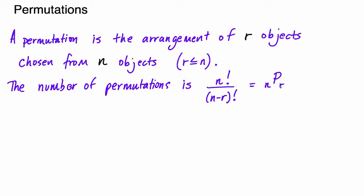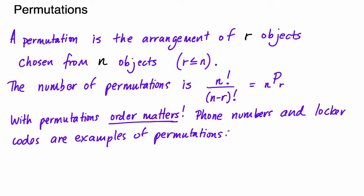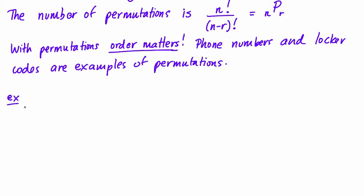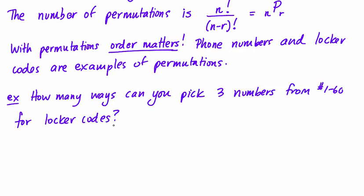With permutations, order matters. Things like phone numbers and locker combinations where the order of how you input those numbers matters is an example of a permutation. For example, how many ways can you choose 3 numbers from the numbers 1 to 60 for locker codes? And each number has to be different.